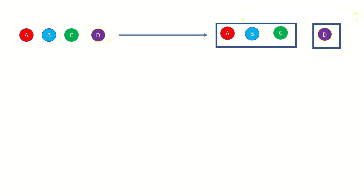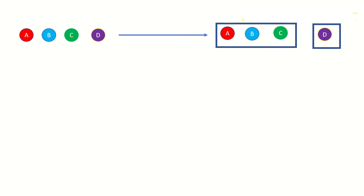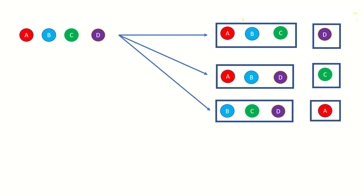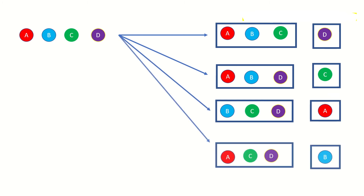How many ways can we partition these four elements into two non-empty subsets? We could place a, b, and c together in one subset and d on its own; a, b, d in one subset and c on its own; b, c, d together and a on its own; or a, c, d together and b on its own.